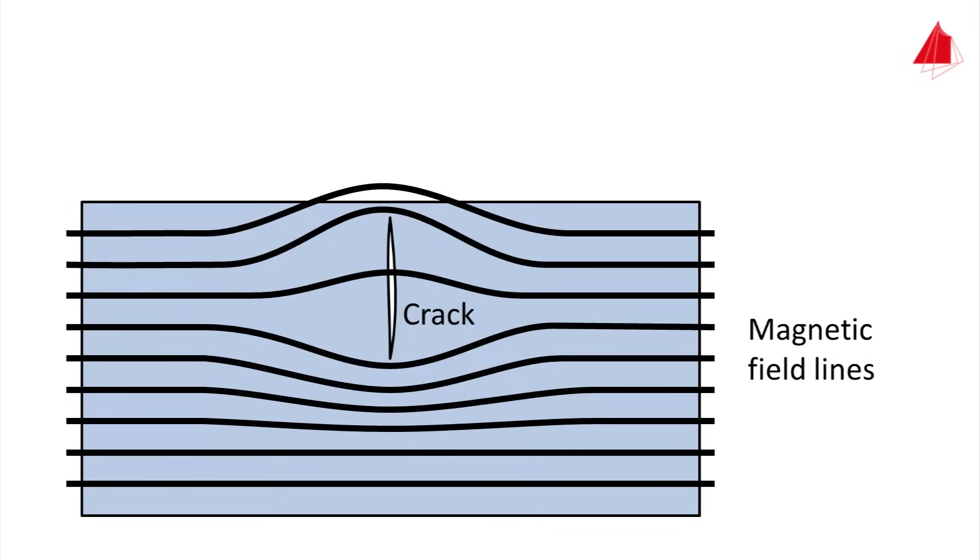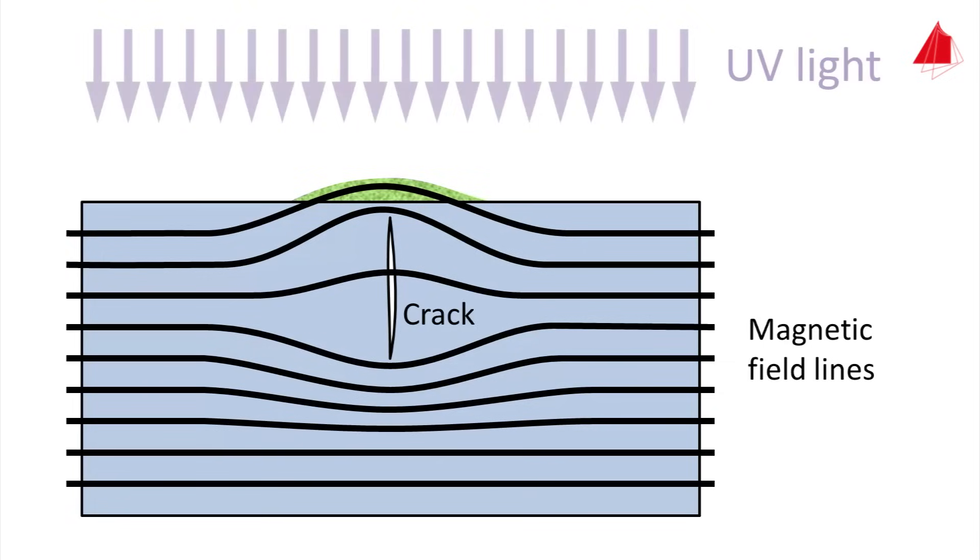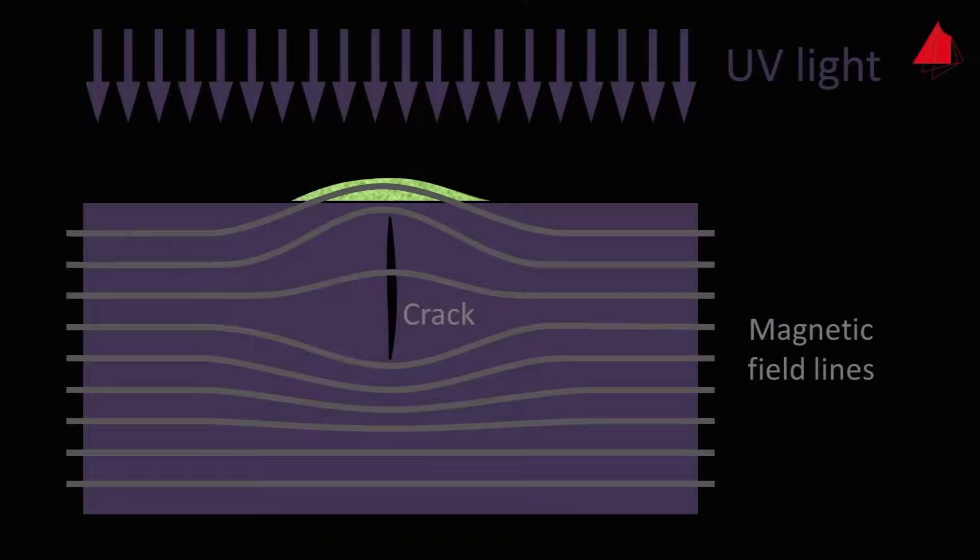Even cracks can be detected that are not open to the surface but just below it, as long as they are not too far below the surface. But one precondition must always be fulfilled: the magnetic field lines must be perpendicular, or at least at a certain angle to the defect. Otherwise there will be no leakage field and the defects remain undetected.